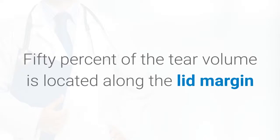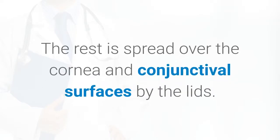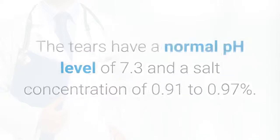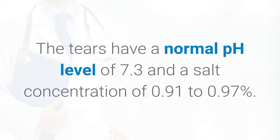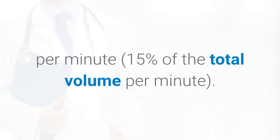50% of the tear volume is located along the lid margin and is called the tear meniscus or lacrimal lake. The rest is spread over the cornea and conjunctival surfaces by the lids. The tears have a normal pH level of 7.3 and a salt concentration of 0.91 to 0.97%. Normal tear evaporation is approximately 1 to 2 microliters per minute, which is 15% of the total volume per minute.